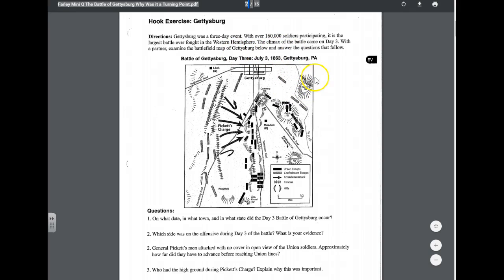If you take a look at the battlefield map, or the battle map, you'll see it's titled the Battle of Gettysburg, day three, July 3rd, 1863, and it occurred in Gettysburg, Pennsylvania.